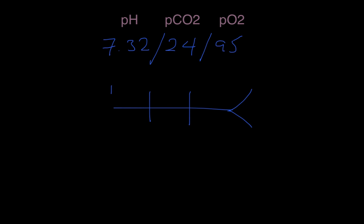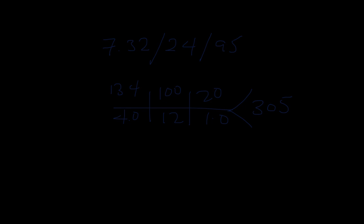Sodium of 134, potassium of 4.0, chloride 100, bicarb 12, BUN 20, creatinine 1.0 and glucose 305. And try to figure out the acid-base disorder in this case.